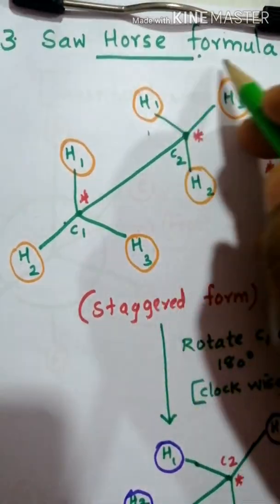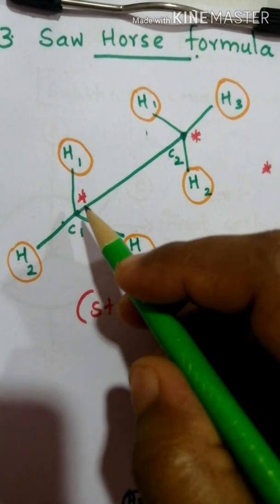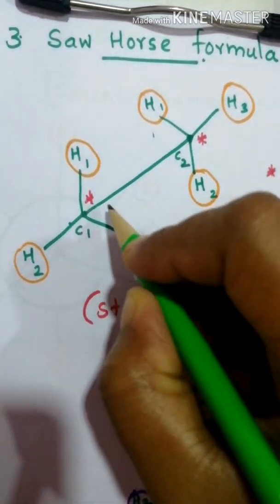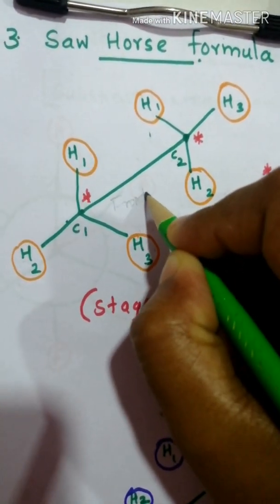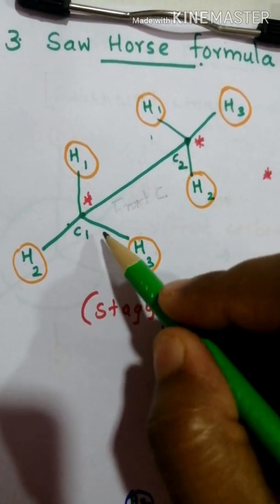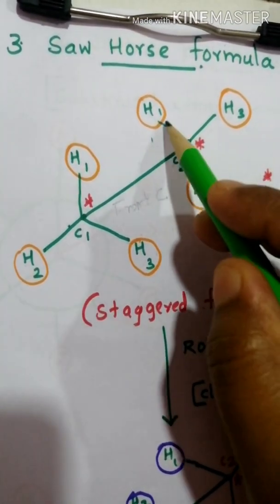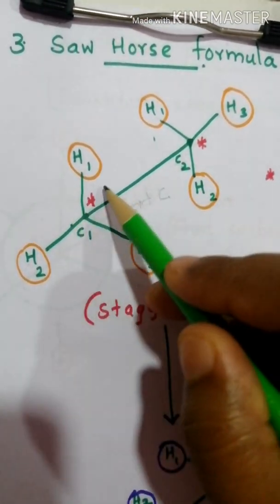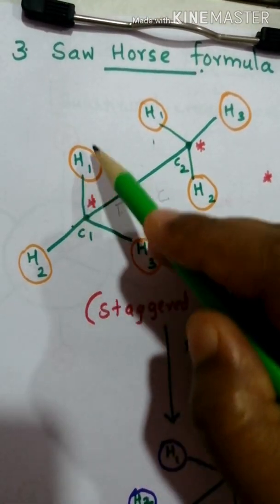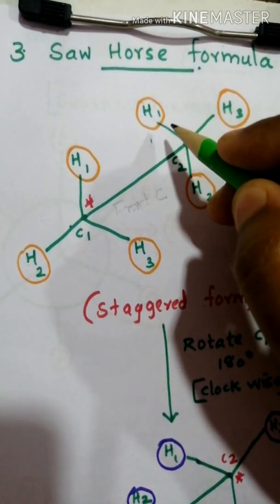What do you mean by staggered form? In staggered form, C1 is considered to be front carbon and C2 is considered to be back carbon. In staggered form, the front projection and the back projection look far apart - they are not close enough. These projections are not close enough in case of staggered form.